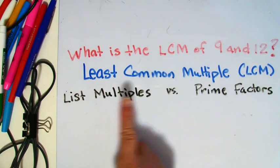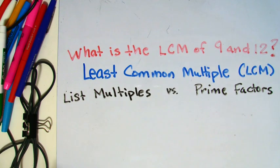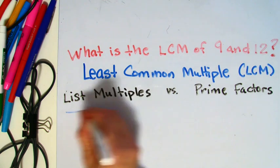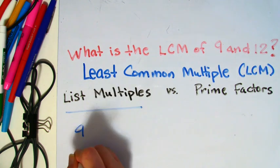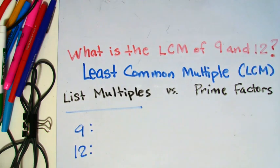In this problem, we have, what is the lowest common multiple of 9 and 12? And so I'm going to just list the multiples of 9 and 12, and I want to see what that multiple is going to be.